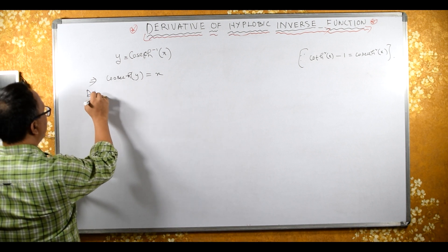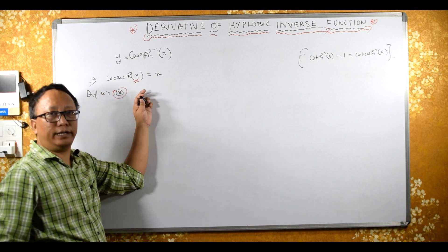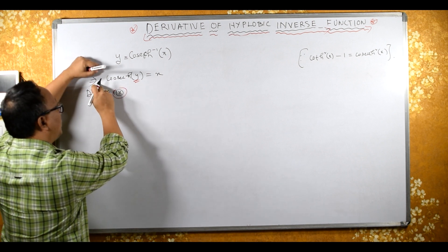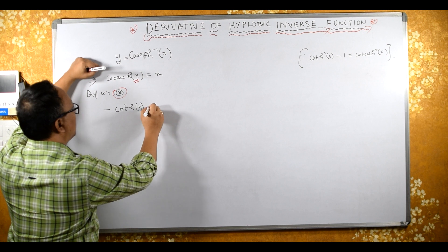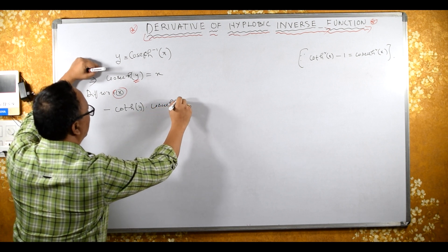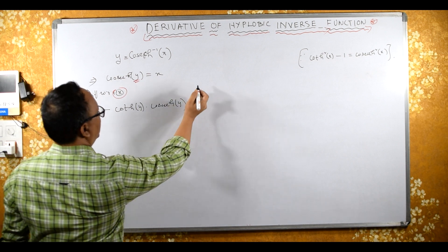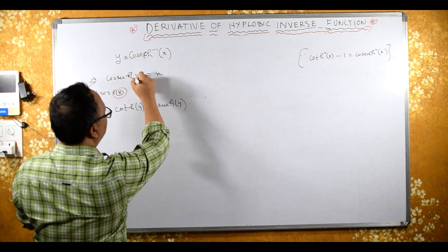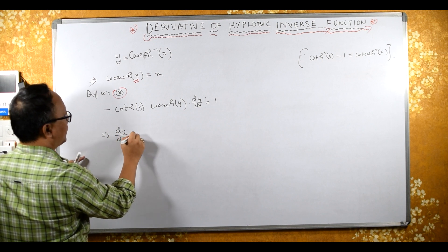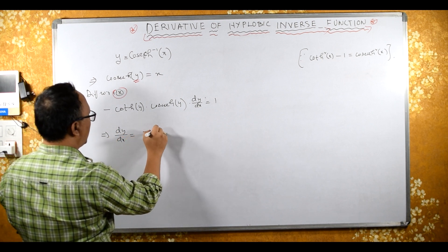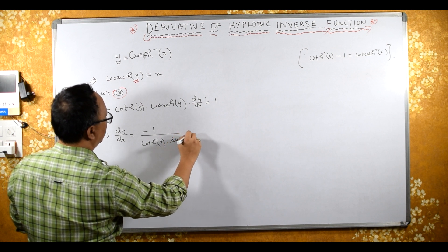Now differentiating with respect to x — be careful, we have y on the left side but we are differentiating with respect to x. The differentiation of cosec hyperbolic is minus cot hyperbolic y into cosec hyperbolic y, and that equals the derivative of x which is 1. So dy upon dx equals 1, which gives us dy upon dx equal to minus 1 upon cot hyperbolic y into cosec hyperbolic y.